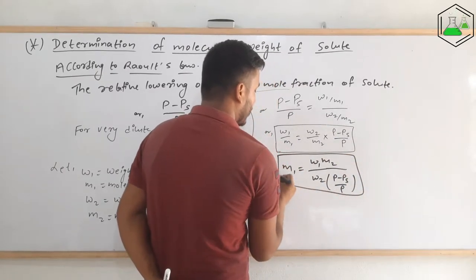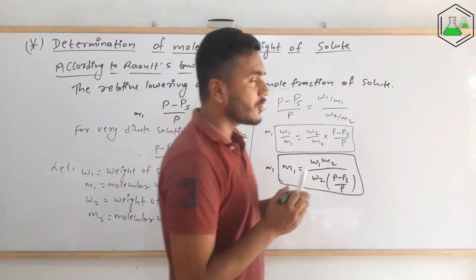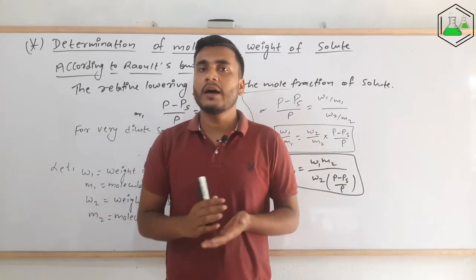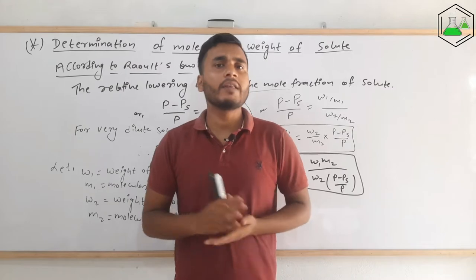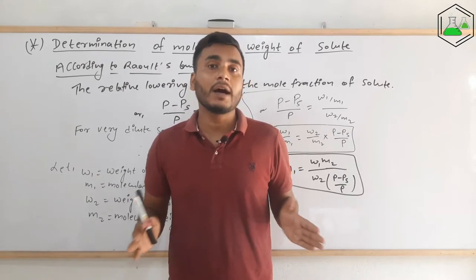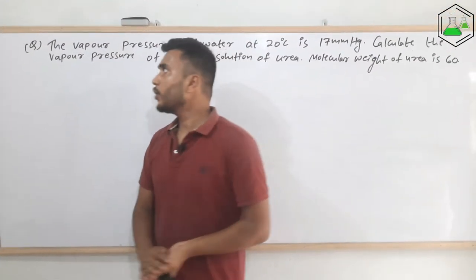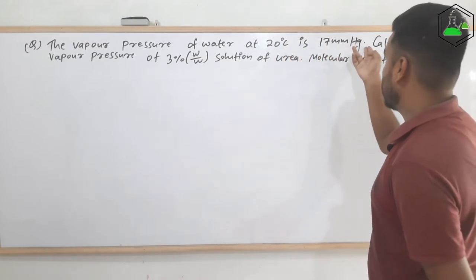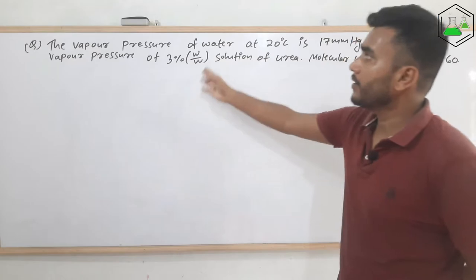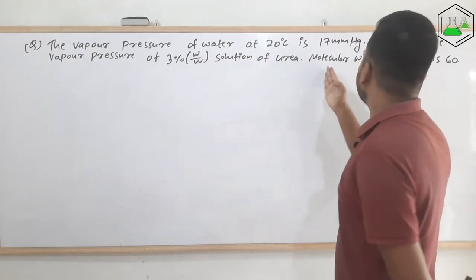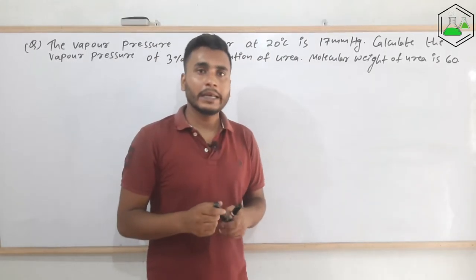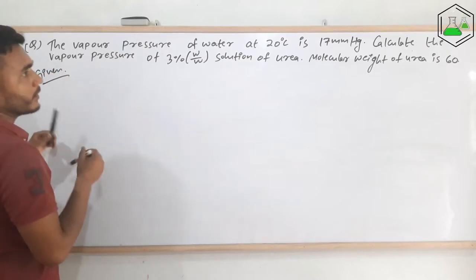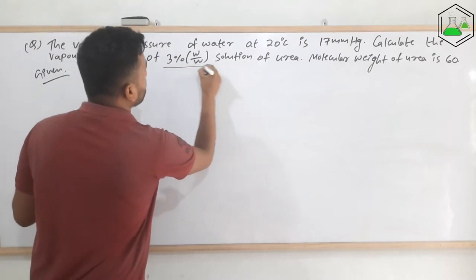I hope you understood how we calculate the value of m1 — that is the molecular weight or molecular mass of the solute — using Raoult's Law. Now let's see a very important numerical problem that is frequently asked in examinations. The question is: the vapor pressure of water at 20 degrees Celsius is 17 mmHg. Calculate the vapor pressure of a 3 percent w/w solution of urea. The molecular weight of urea is given to be 60.